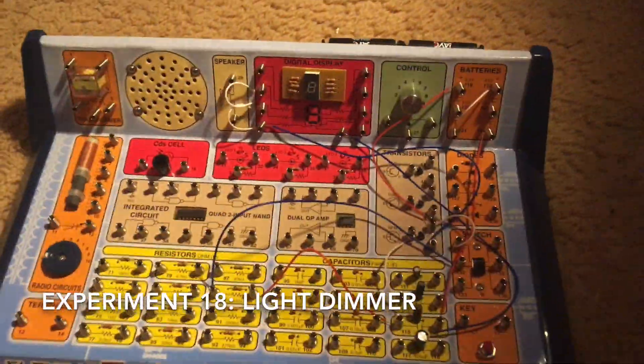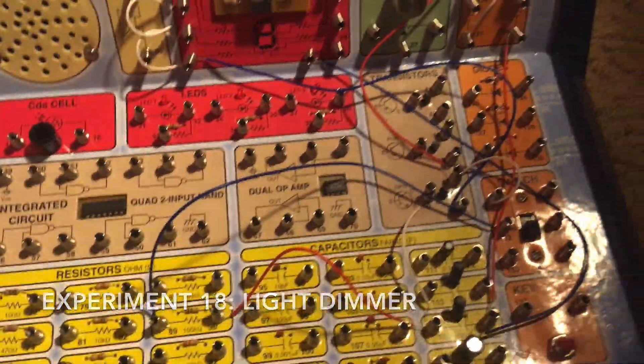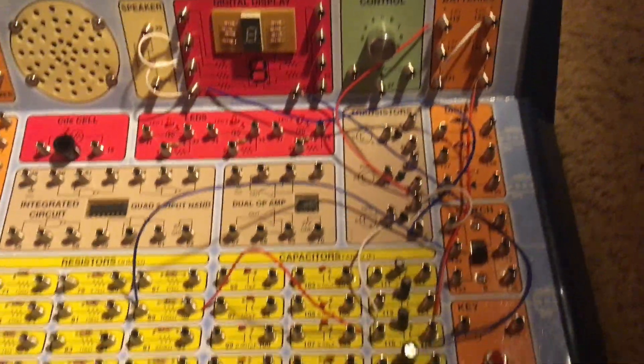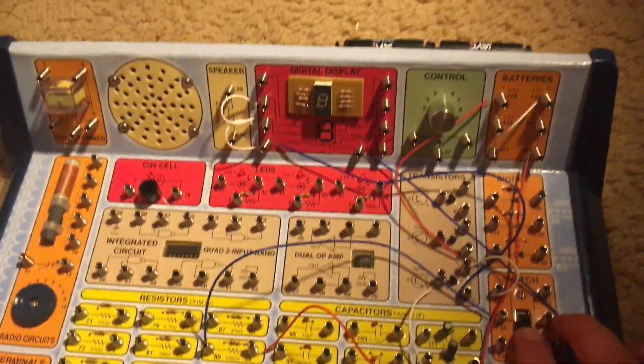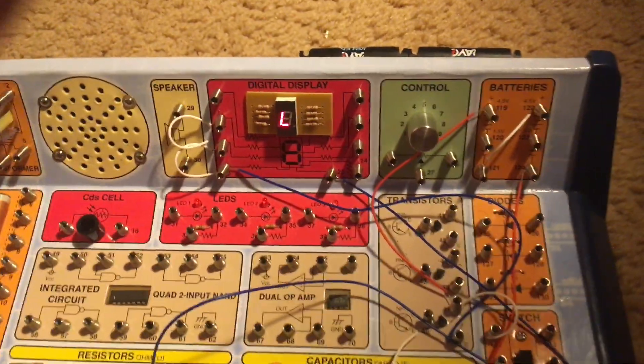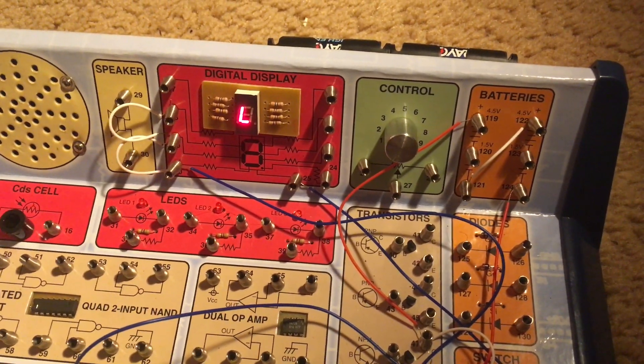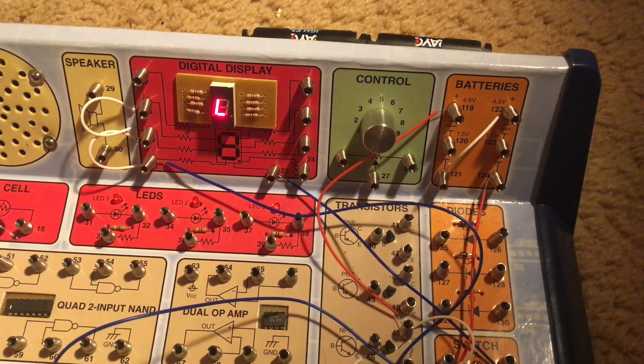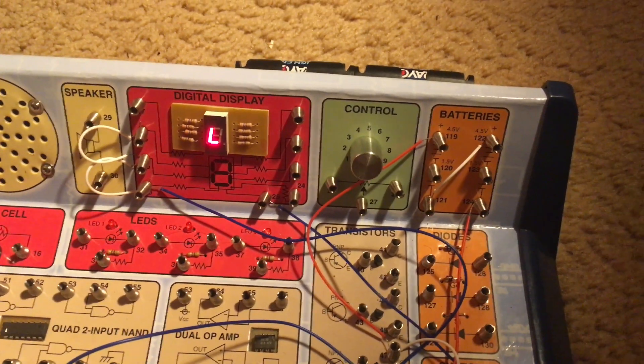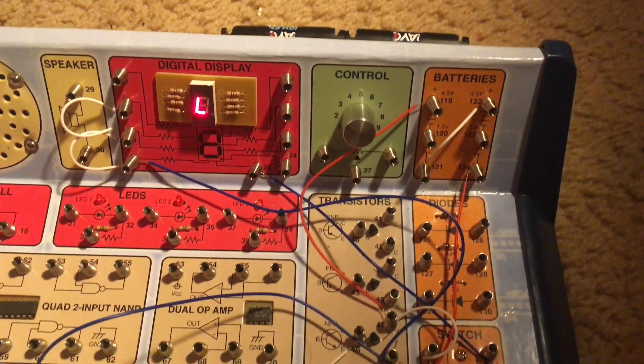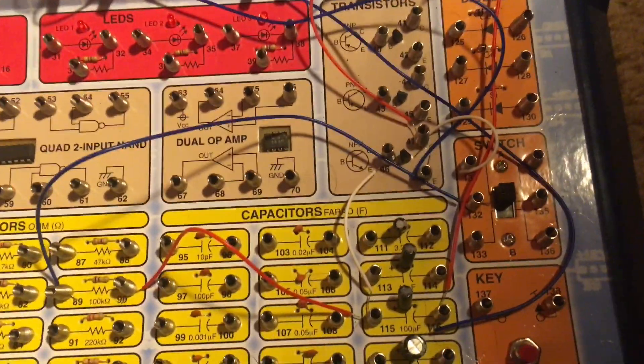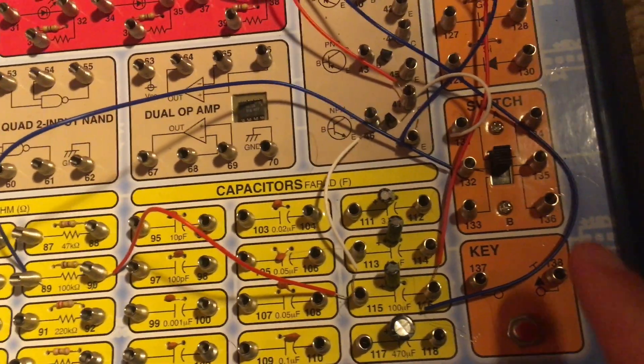Experiment 18 is light dimmer. I am going to move the slide switch to position A and gradually the LED 7 segment display will display the letter L because current from the battery has charged up the 100 microfarad capacitor right here.